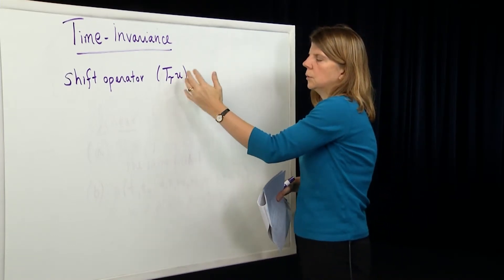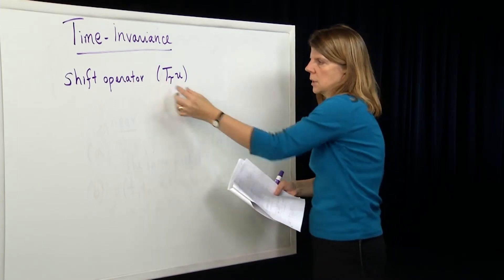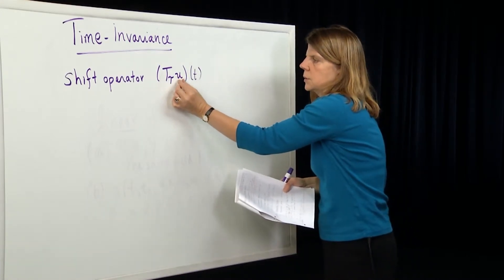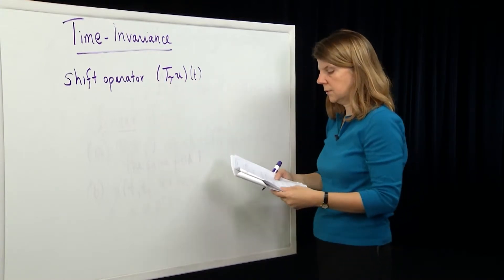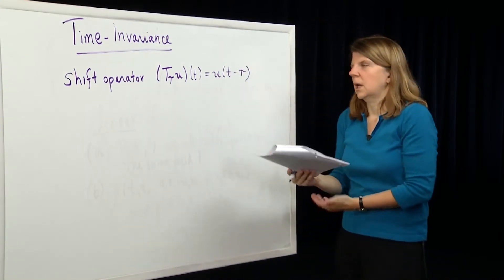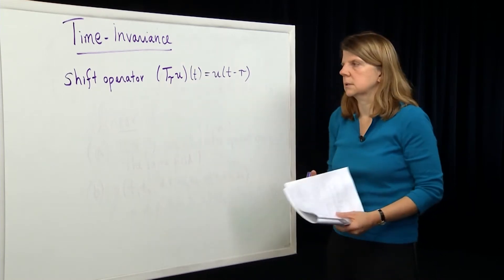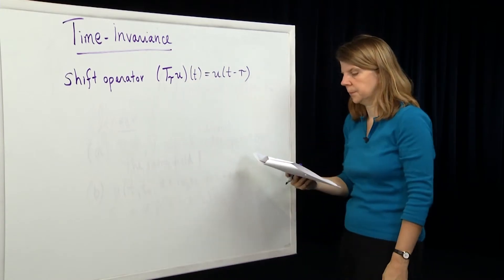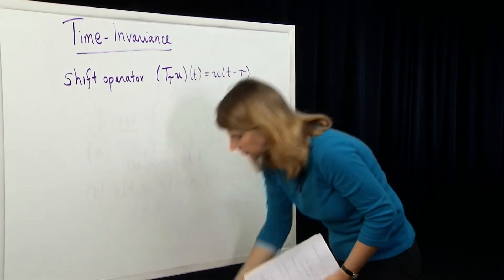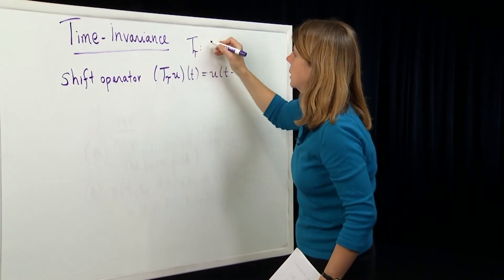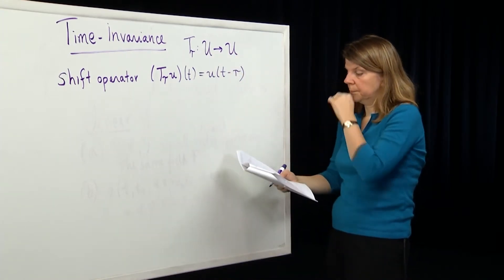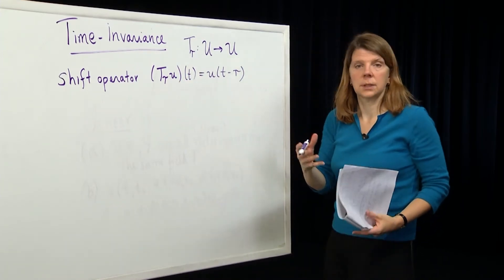A shift operator T_tau of u can time shift signals. Think about u as our input signal — u(t) is the function, and we shift it in time according to the operator T_tau. That gives a new shifted signal, which is a function of t. How is it related to u? It's equal to u of (t minus tau). You can apply T_tau to signals y, signals x, etc. It's a general operator that acts on signals, operating on our function space U and giving back a new function.